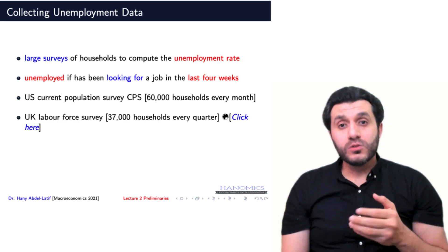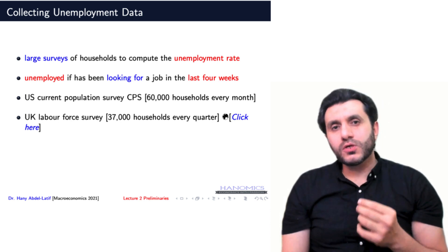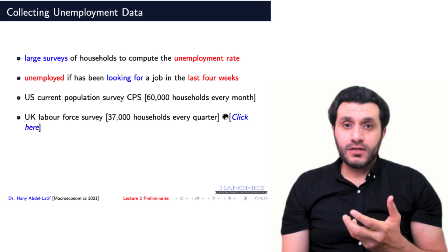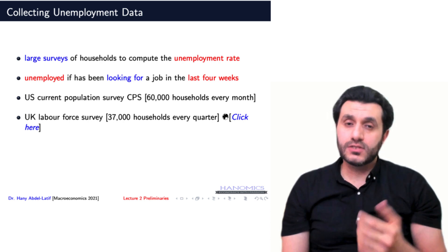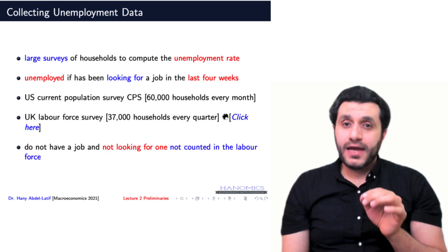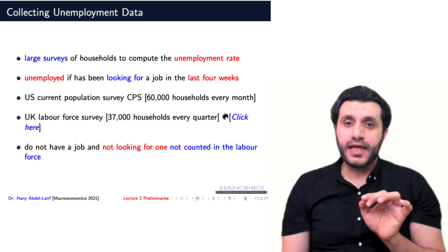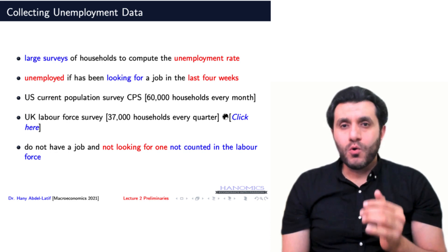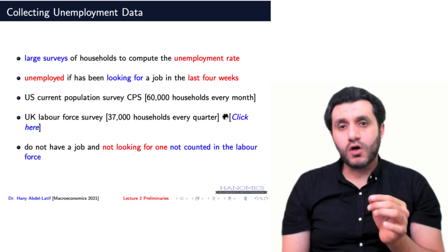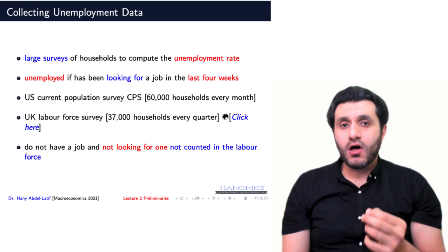A similar household survey in the UK is called the Labour Force Survey, which includes quarterly data for 37,000 households. Such large surveys help calculate the unemployment rate. Remember, if an individual does not have a job and is not looking for one, that individual will not be counted in the labor force. Discouraged workers who have given up looking for a job and voluntarily unemployed people are not part of the labor force.